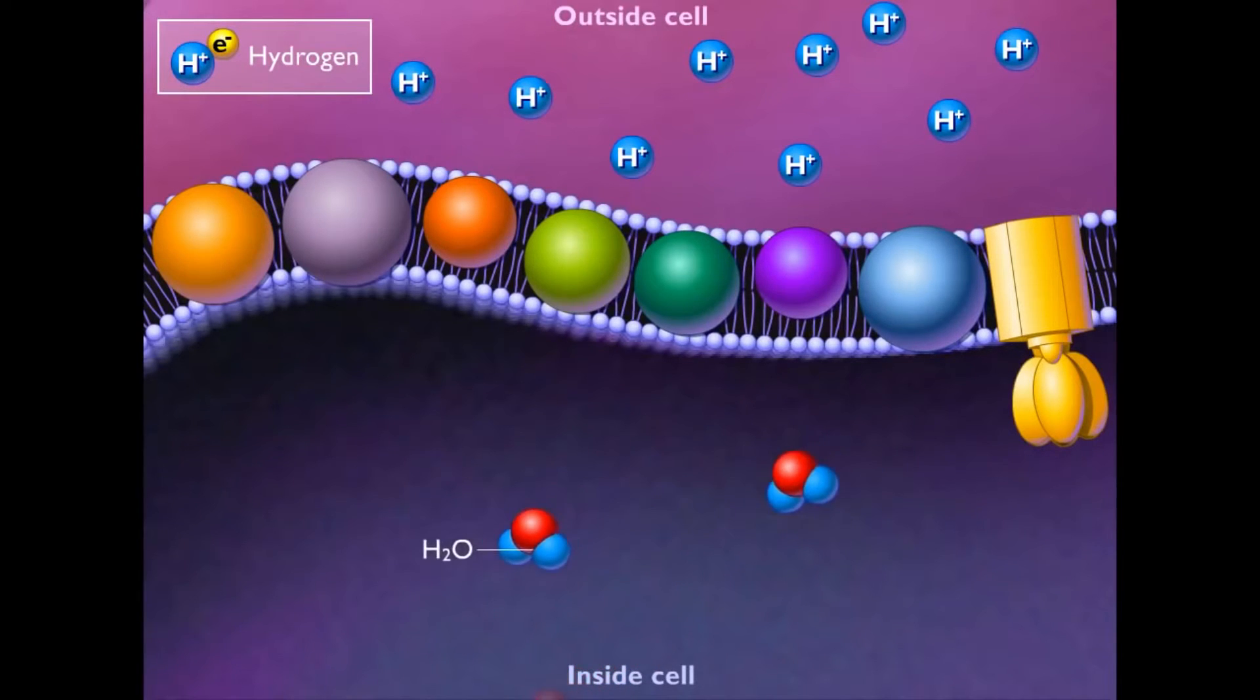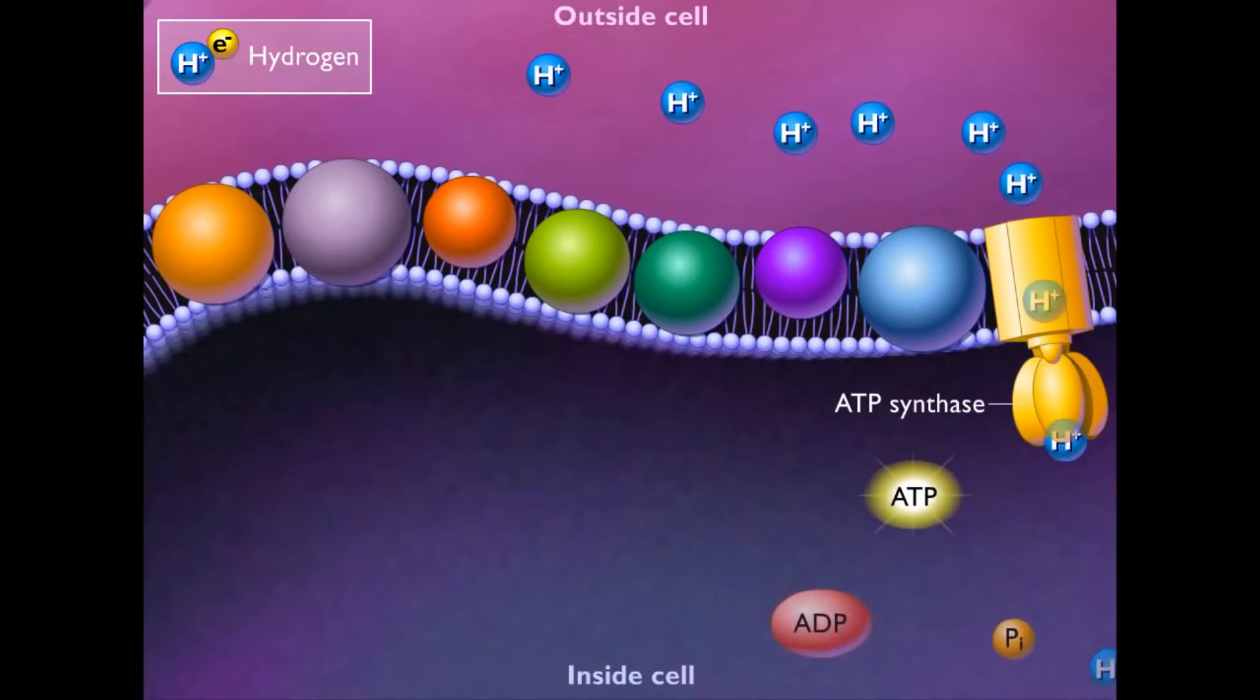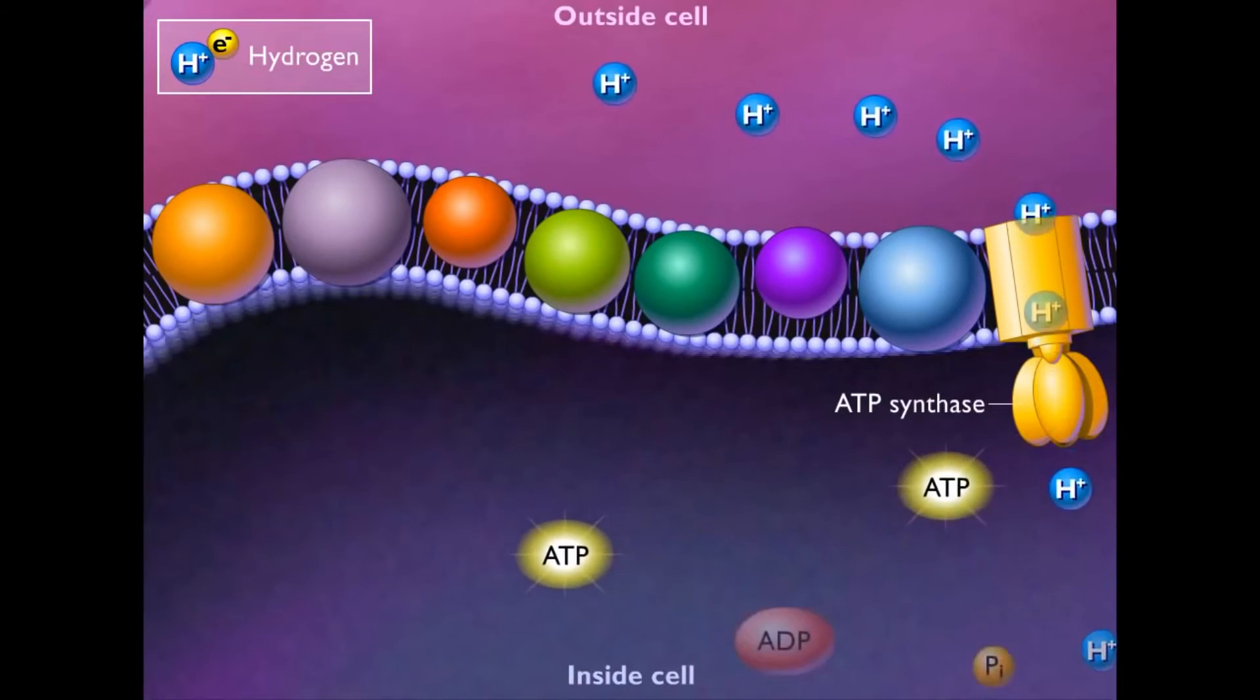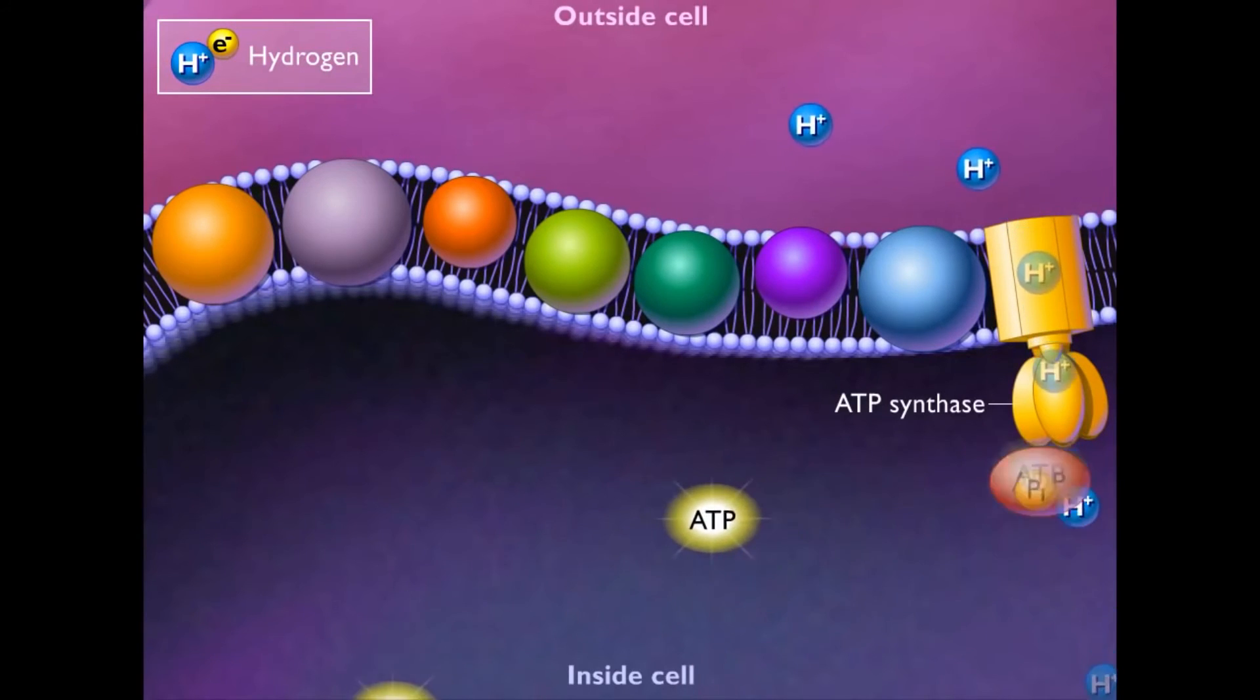The enzyme ATP synthase utilizes the energy of the proton motive force to synthesize ATP. This enzyme allows protons to pass back into the cell and couples the energy released in this process to the phosphorylation of ADP to form ATP.